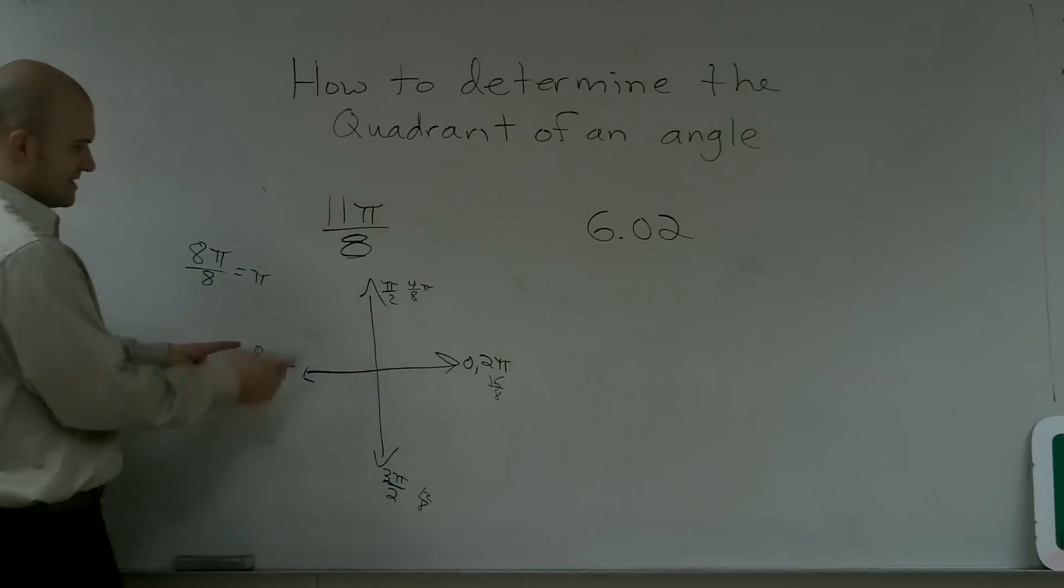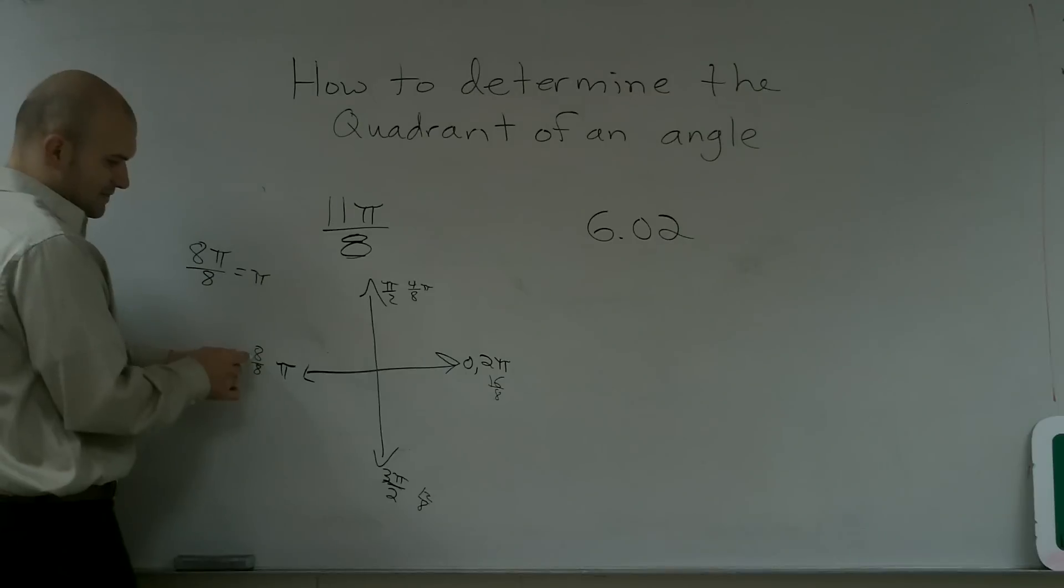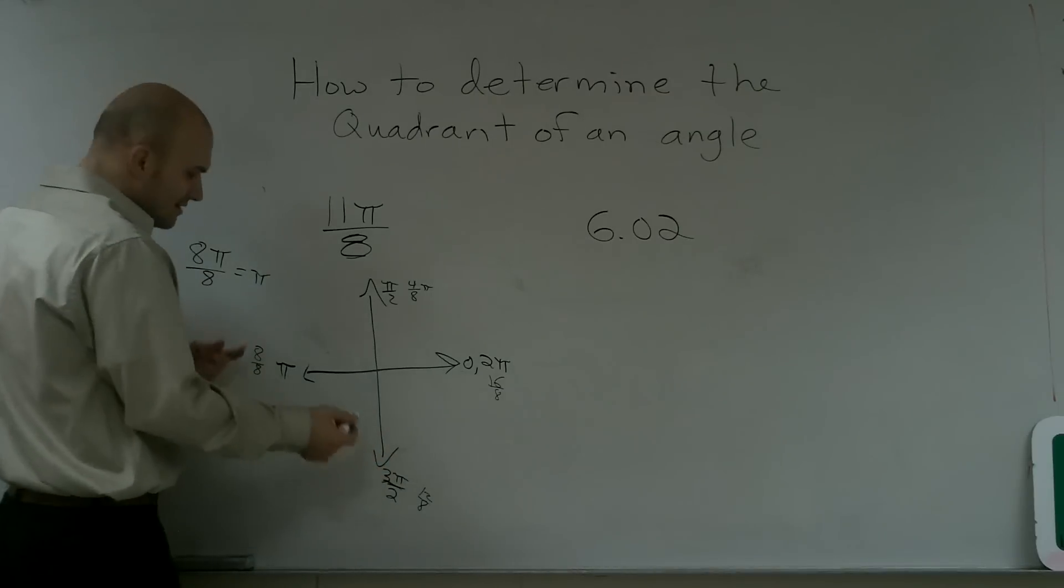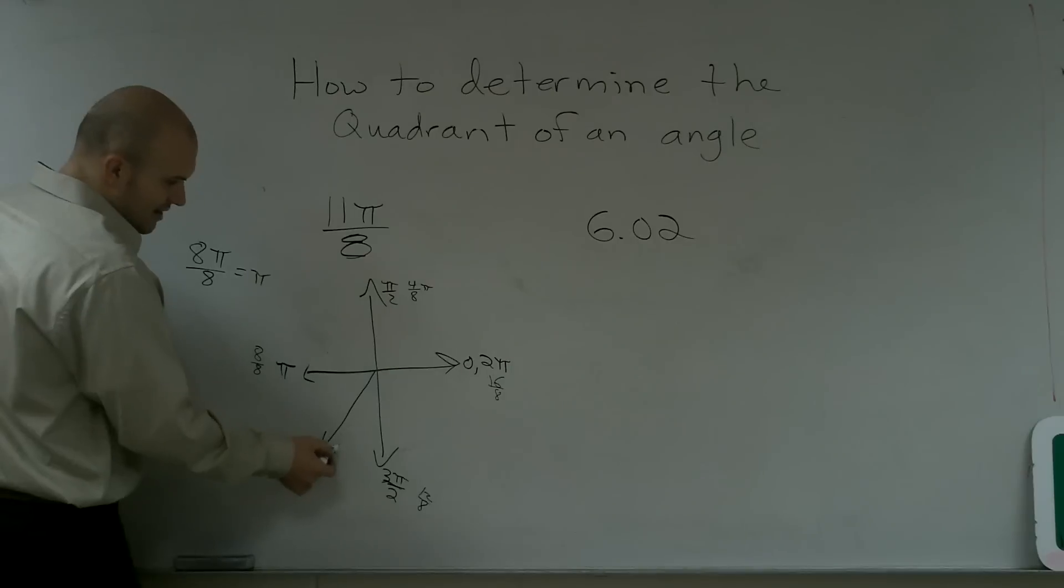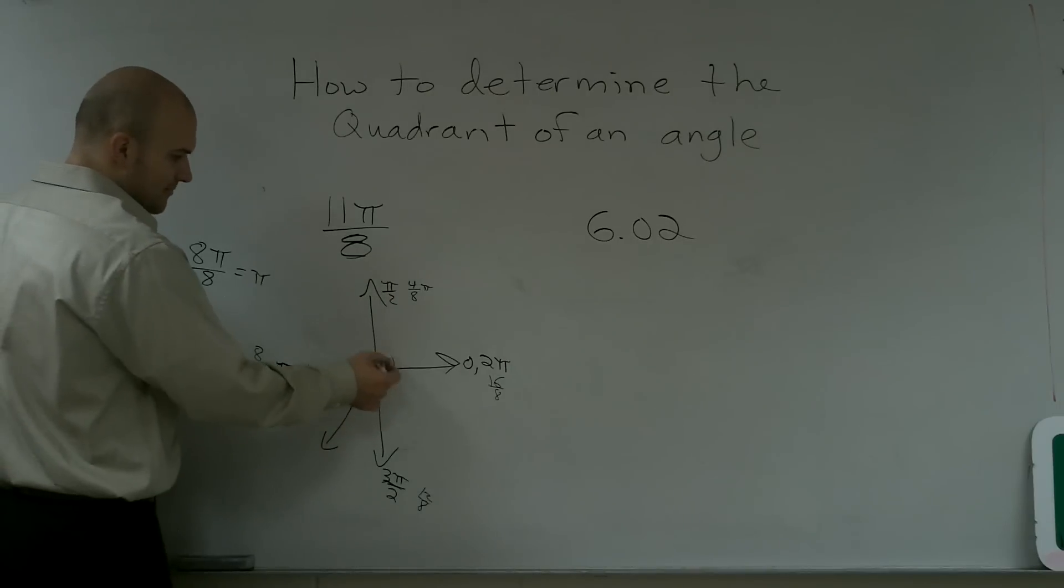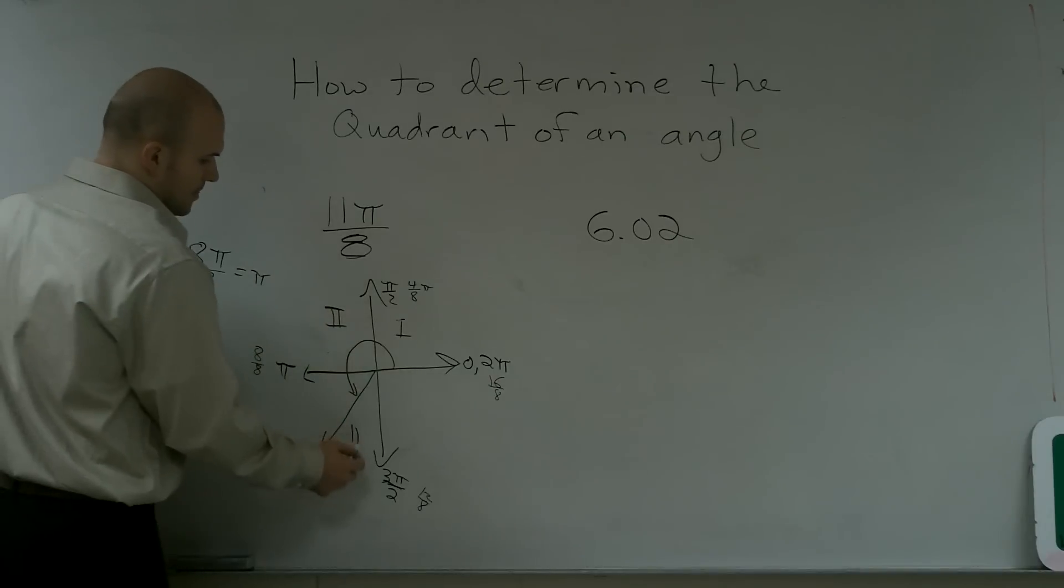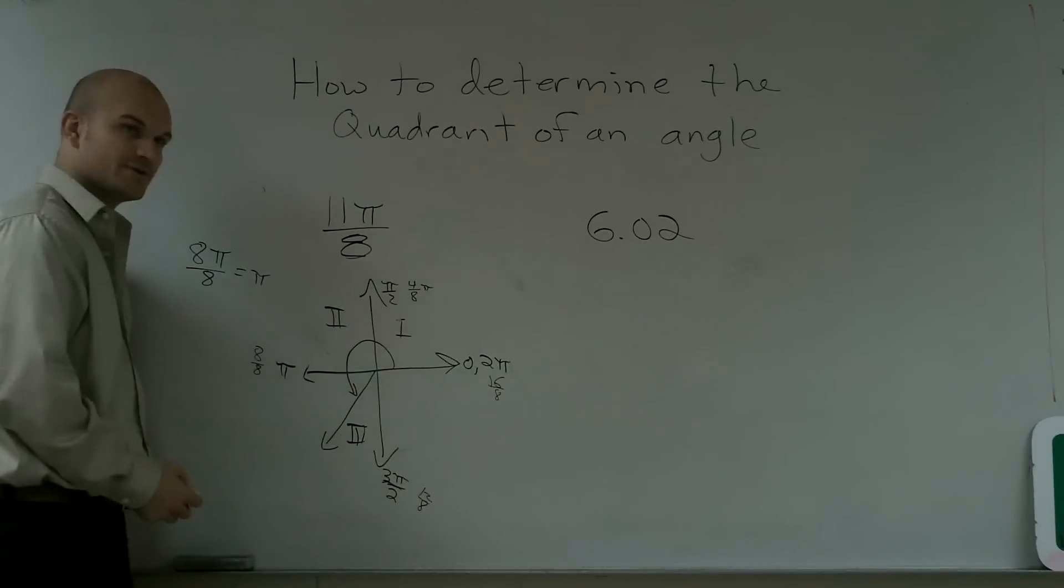So if I was going to look, I'm saying, oh, I have 11/8. So it's between 8 and 12. And essentially, that's going to be roughly around here. It's going to be halfway between there. So 11/8, which is in the third quadrant.